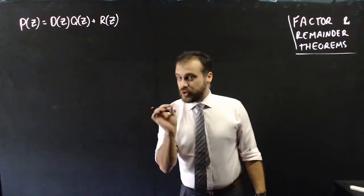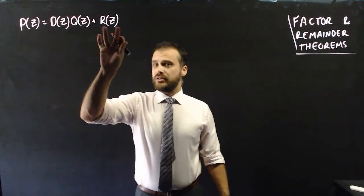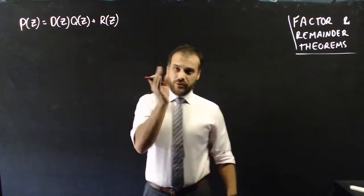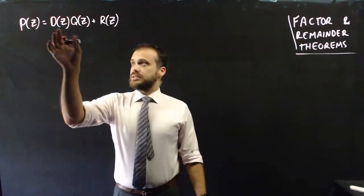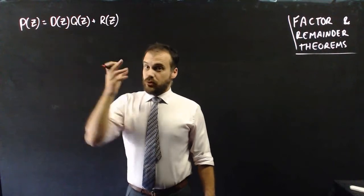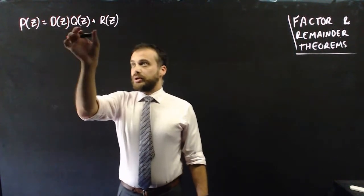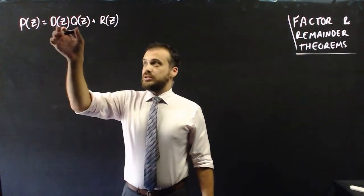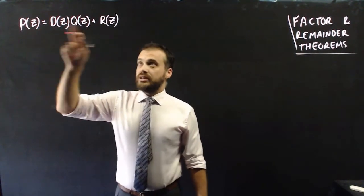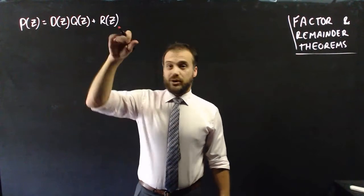Now the important first result here is that if R of z is 0, if the remainder is 0, that means that D of z, the divisor, was a factor of P of z. And so is Q of z, because multiplying those two together give us P of z. So this and this is a factor of that if that equals 0, if that's not there.